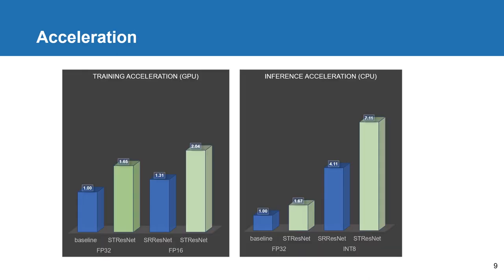Especially when we look at the acceleration factor, combining the spatial temporal convolution with 8-bit quantization can achieve up to 7.11x acceleration in inference. Using ST ResNet alone can also speed up inference by a factor of 1.67. We also see a similar trend in training speed up.